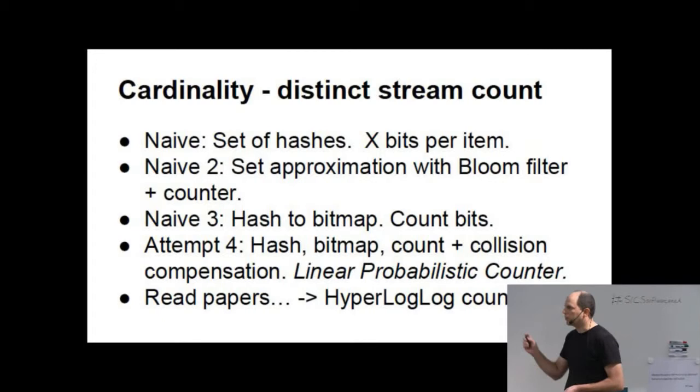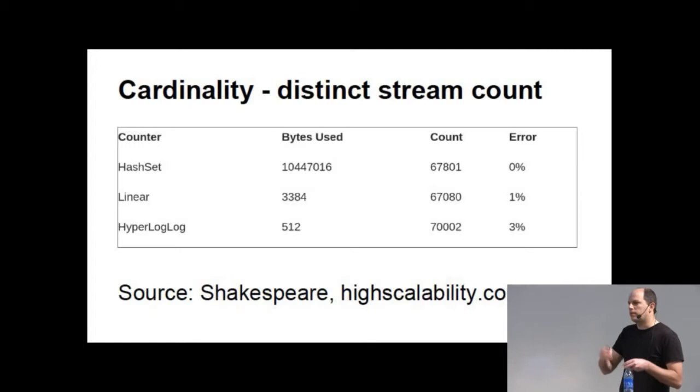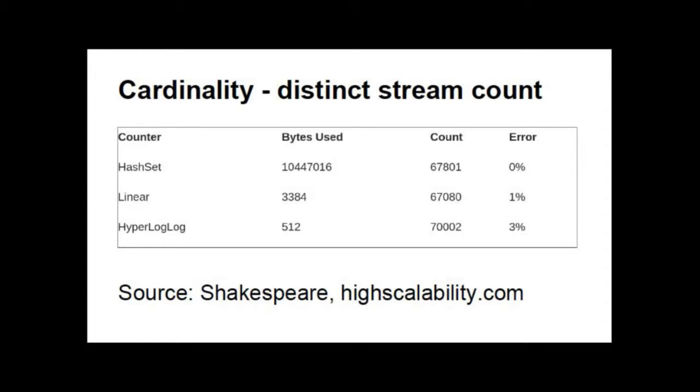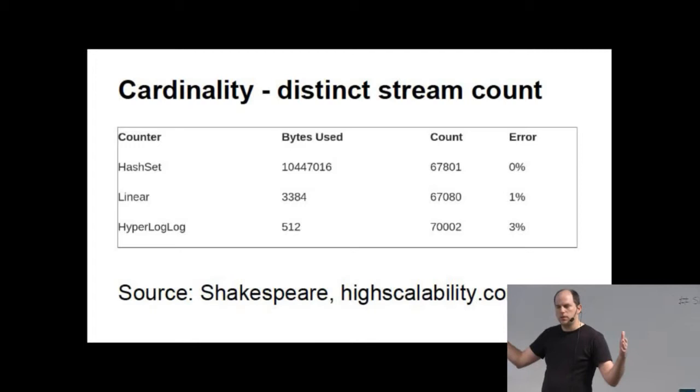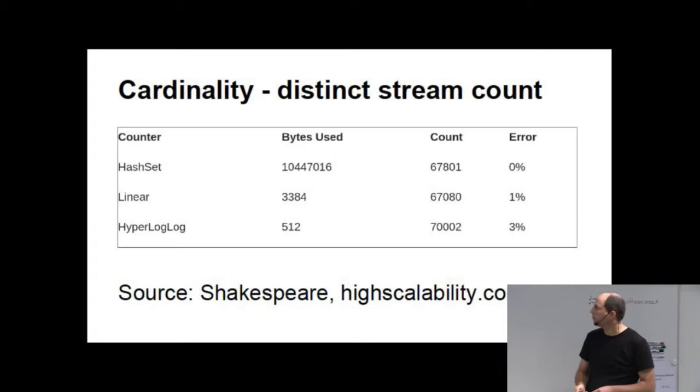And once you realize that somebody might have done this before, you go about and read some papers and you find the hyperloglog counter, which I'm going to try to explain to you. And here you can see a comparison of the number of bits that you need to represent. The input here is Shakespeare's completed work and the accurate count with the Java hashset implementation you see at the top. And the linear probabilistic counter and the hyperloglog counter below. As you can see, you need very few bytes if you can tolerate a few percent miscounting. The hyperloglog guys claim that they can count cardinality of a billion things with 2% errors in a few kilobytes of storage. Why do you need it to be so small? Because you remember the time window slide earlier? Since there are lots of time windows that you want to count. The smaller you make your representations, the better granularity you can have in time windows and the longer history you can store in memory.